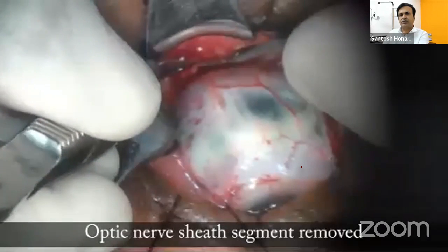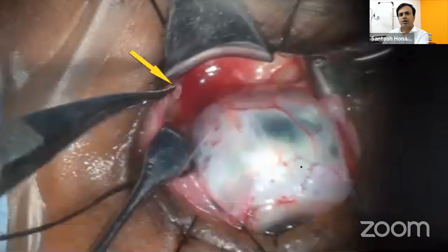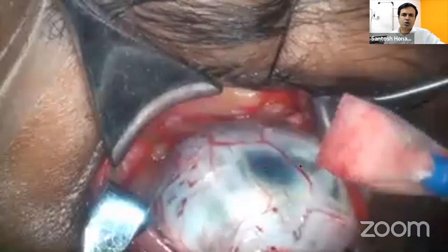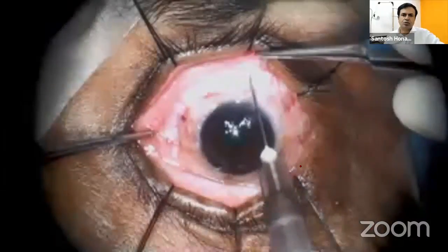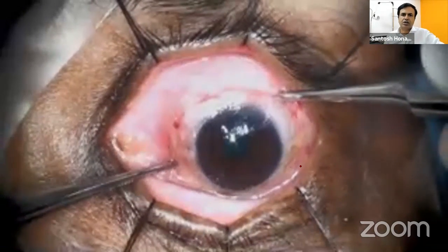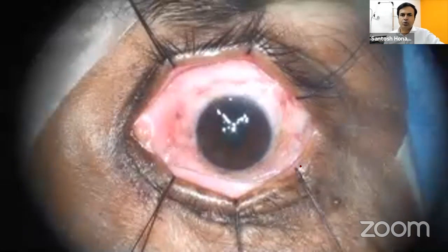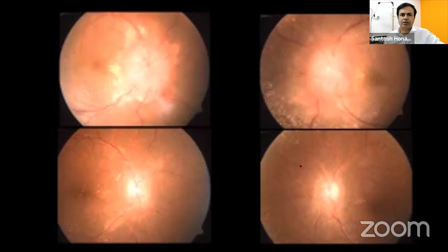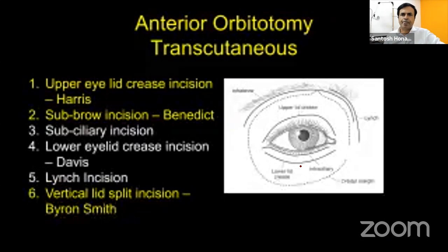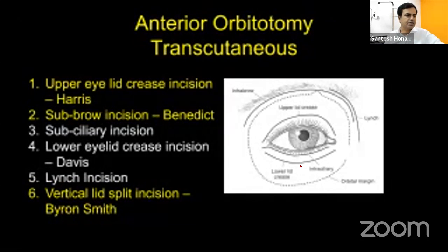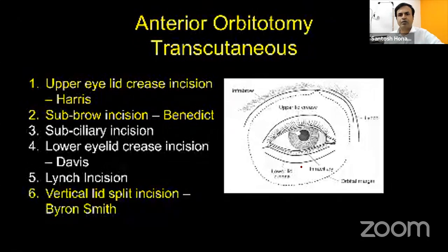Optic nerve sheath fenestration via the transconjunctival approach is quick — close the conjunctiva with glue. Postoperatively, the optic nerve appearance improves, including a contralateral effect. Transcutaneous orbitotomy incisions include: upper lid crease (Harris), sub-brow (Benedict), sub-ciliary (unnamed), lower lid crease (Davis), Lynch, and vertical lid split (Berke-Reese).